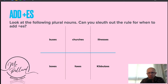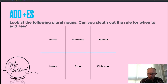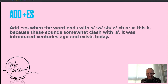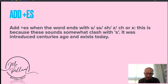What rule is there for when we need to add ES? We add ES when the word you're trying to pluralize ends with an S, a double S, an SH, a Z, a CH, or an X. This is because these sounds somewhat clash with an S — it was introduced centuries ago and exists today. These are ones you'll need to watch out for and remember when you are pluralizing.